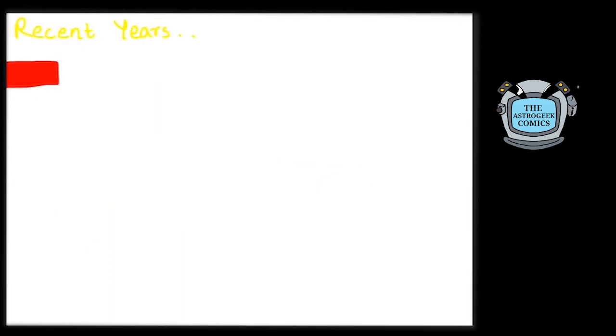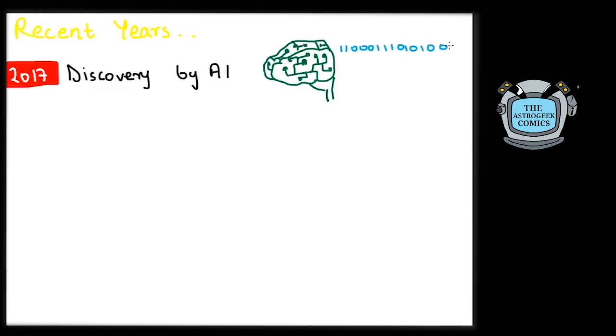To pile up on this list of amazing discoveries, a discovery using artificial intelligence was made in 2017, which revealed an 8-planet system, just like ours, around the star Kepler-90. The weird thing is, all of these planets lie closer to the star than Earth is to the Sun.